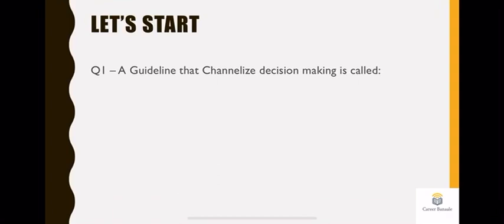The first question of the day is: a guideline that channelized decision making is called what? When you have such a question you need to read it very slowly first. Read the question: a guideline that channelized decision making. Option A is policy, option B is rule, option C is staffing, option D is all of the above. Staffing is only related to recruitment. Here we talk about a guideline. Either it can be policy or rule. Now, channelized decision making is not rigid. It will keep on changing depending upon the situation.